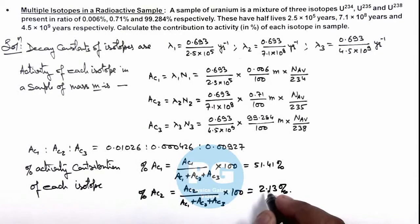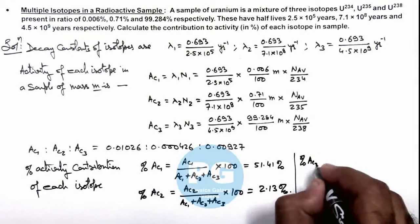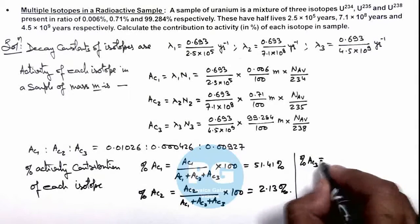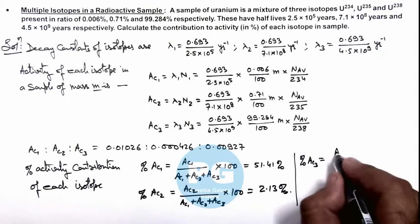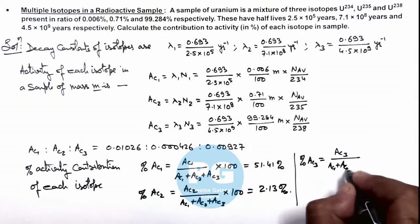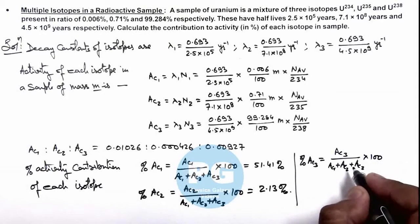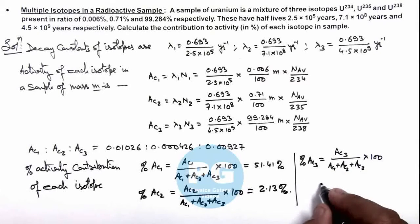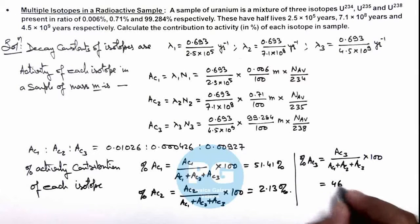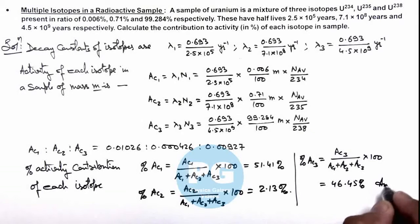And in the similar manner we can calculate the percentage contribution of third isotope in activity, that is activity 3 upon AC1 plus AC2 plus AC3 multiplied by hundred. And on numerically calculating the values this gives us 46.45%. So these are the final results.